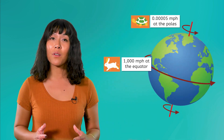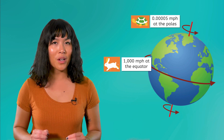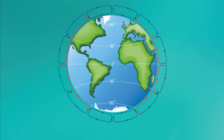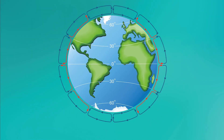The Coriolis effect is not the same at all points on the globe. It's stronger near the poles and weaker near the equator due to the varying speeds of rotation at different latitudes. So how exactly does the Coriolis effect impact wind patterns? Let's put it all together. Near the equator, the warm air rises and moves towards the poles, but because of the Coriolis effect, it curves and creates the trade winds. Earth's rotation deflects the air moving in these convection currents.